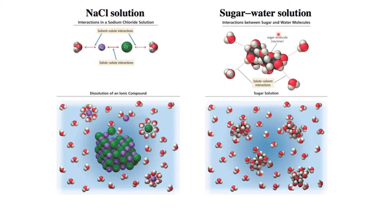Now let's see covalent compounds which do not dissociate in water. I have taken the example of a sugar molecule. Sugar is a covalent molecule which has carbon, oxygen, and hydrogen atoms. The oxygen atom is more electronegative than carbon and hydrogen, so oxygens get a partial negative charge and hydrogens get a partial positive charge in the sugar molecule. Due to this, there is an interaction between the partial positive charge of the sugar molecule and the partial negative charge of the water molecule, and vice versa. This kind of interaction can be represented by this model.